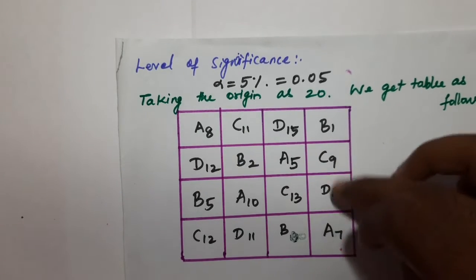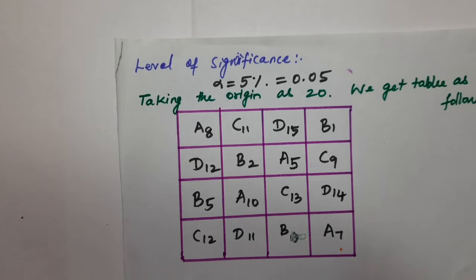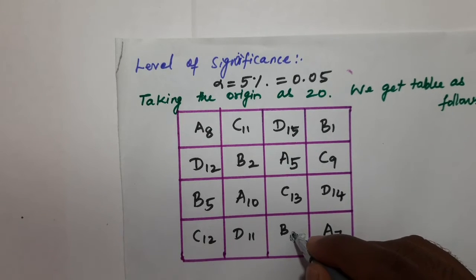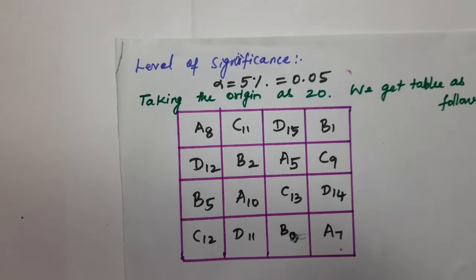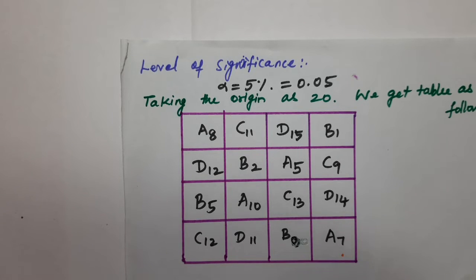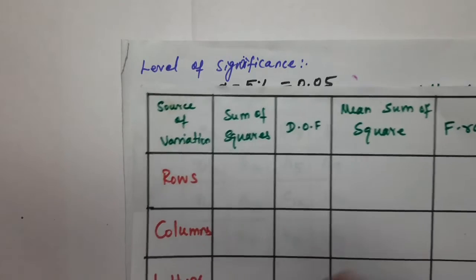The adjusted values relative to origin 20 are computed. Values of zero, and adjusted figures are placed in the table. The sum of squares will be calculated from these adjusted values in the table.